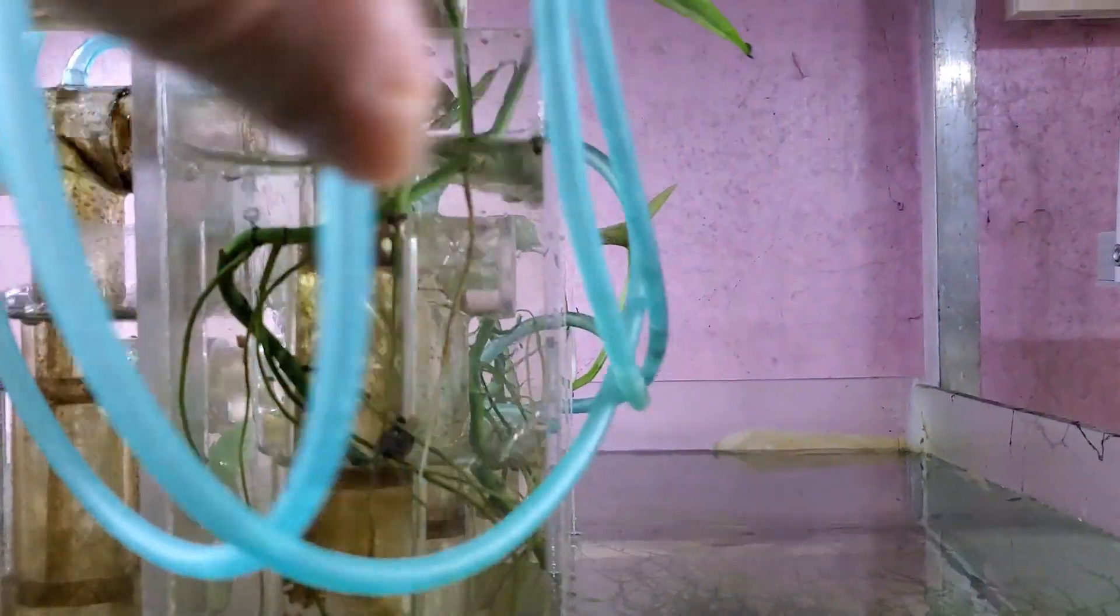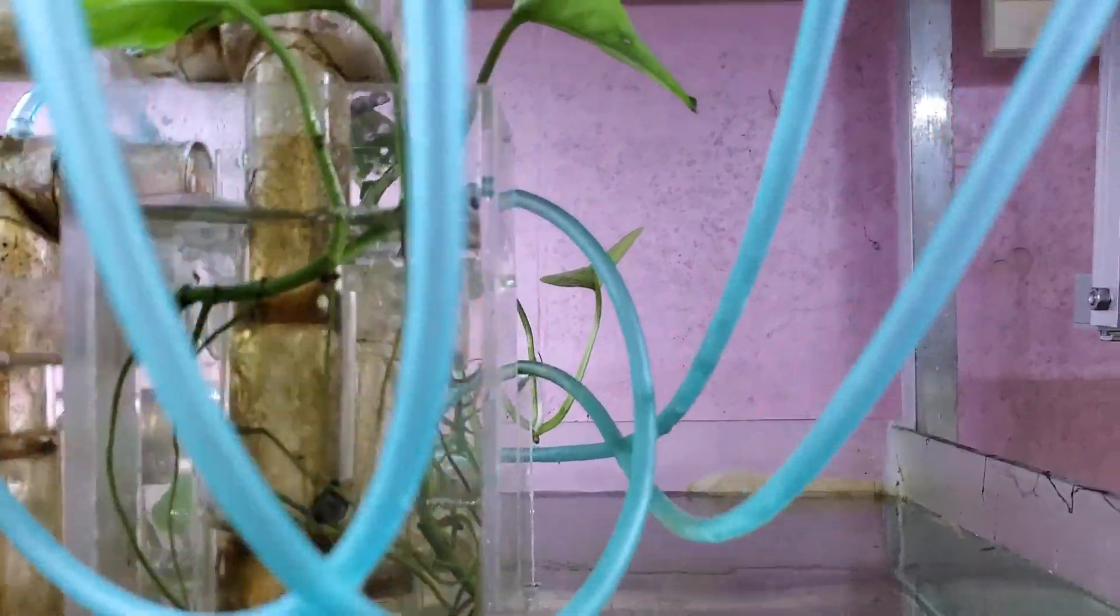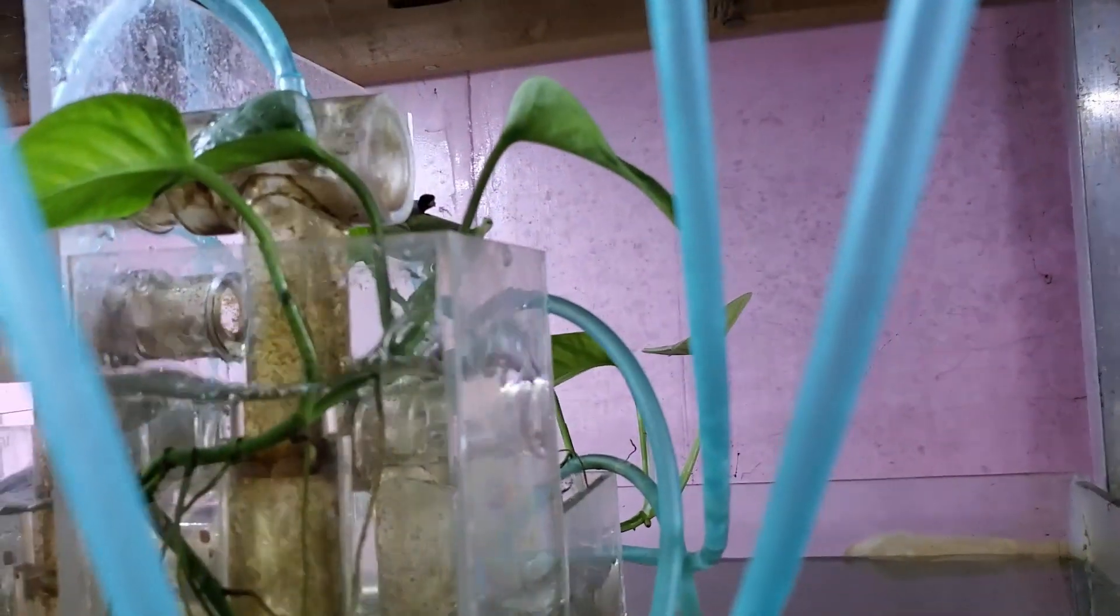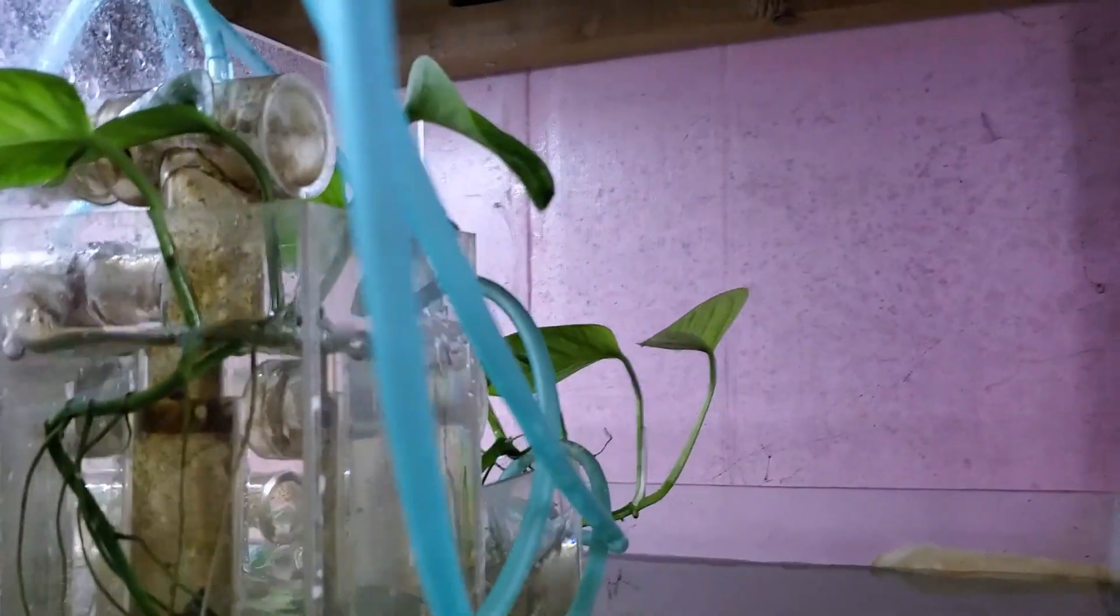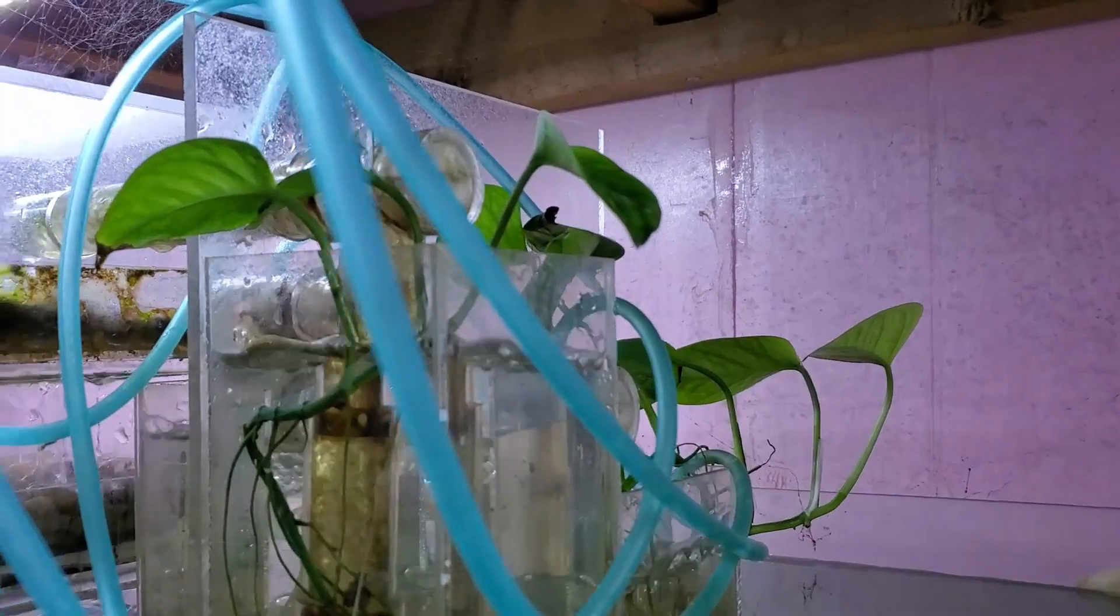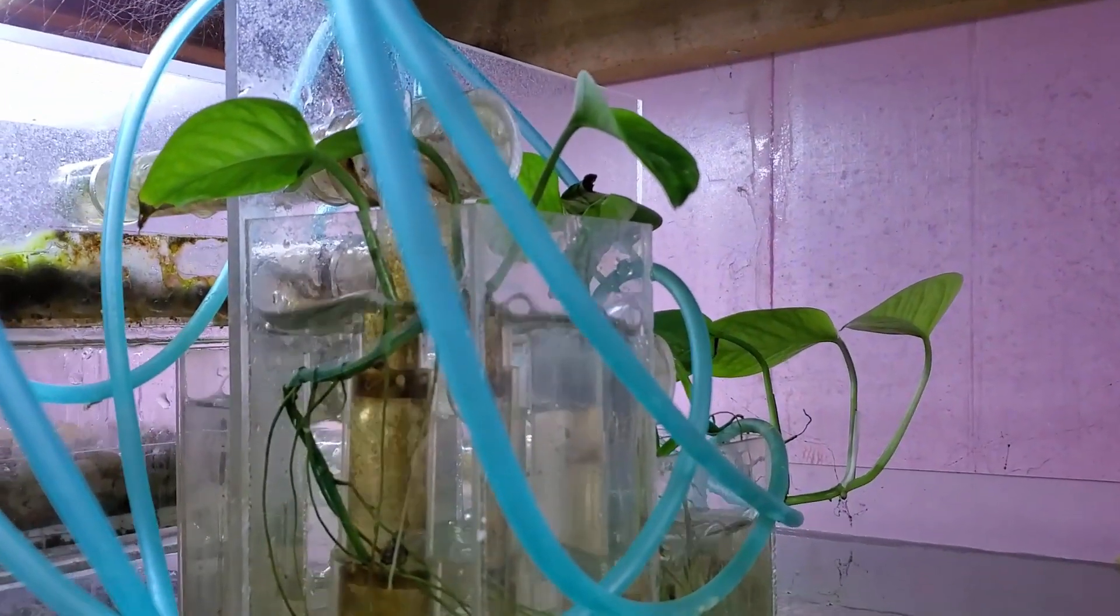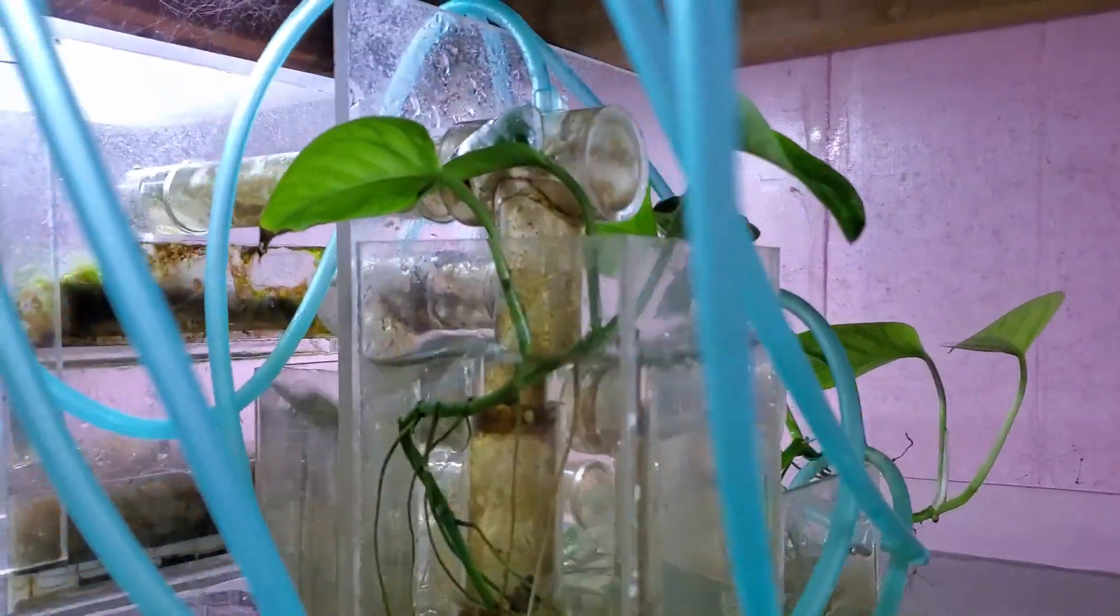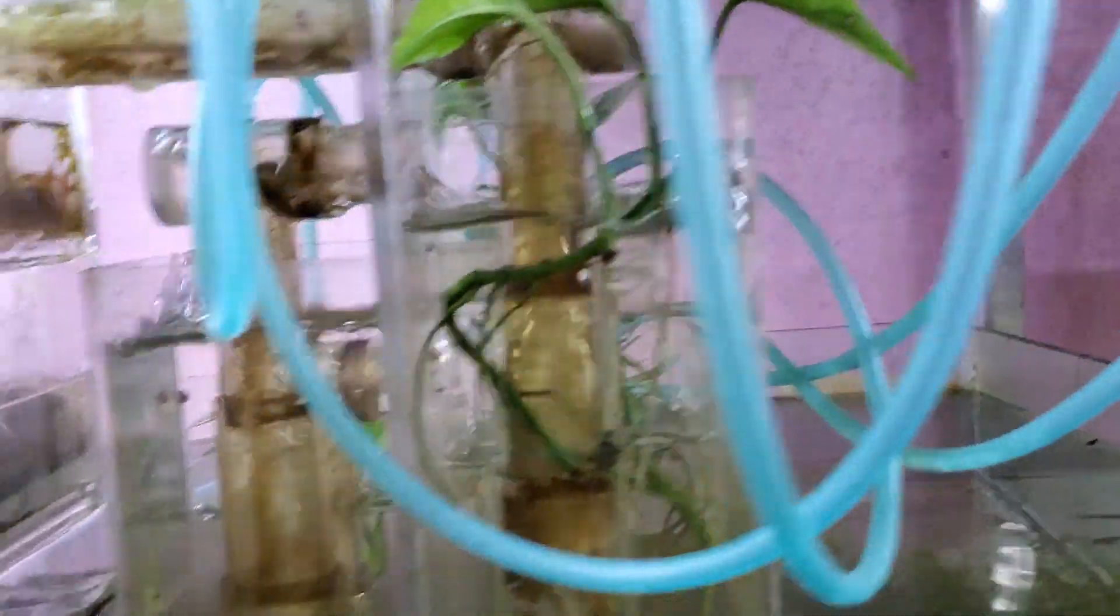It's getting some algae all over it. The Pothos is growing quite well, as you can see, although most of it's actually in the back where you can't see. But it's doing really well. I haven't done anything to it. I haven't cleaned it. I haven't had to adjust it or anything. And it's still chugging along nicely.